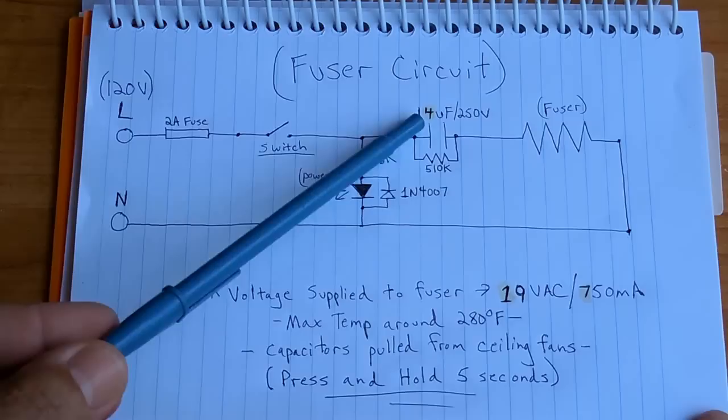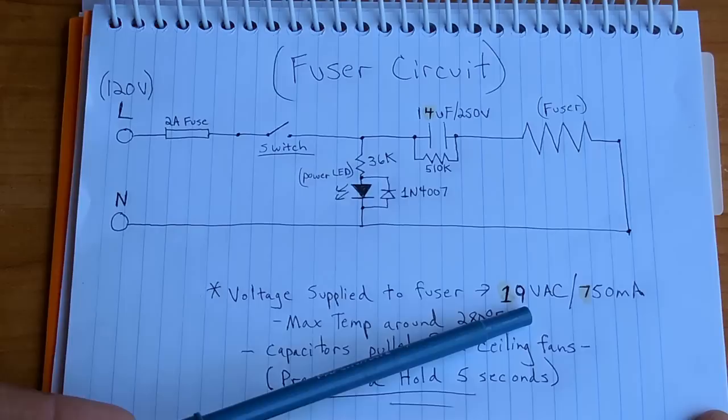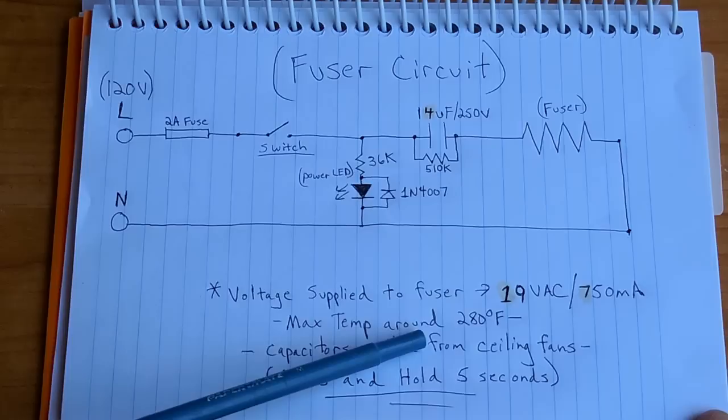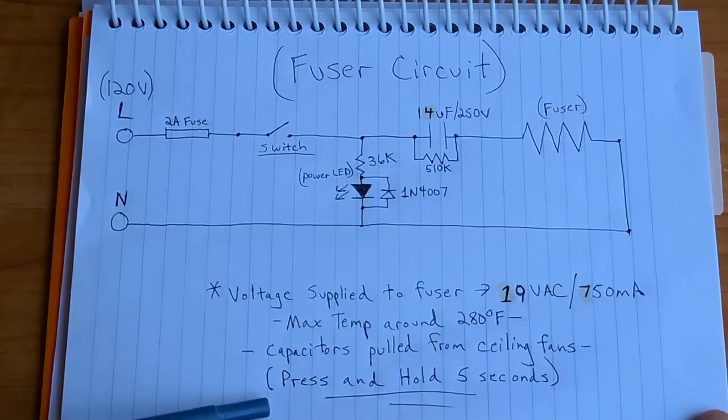Using a 14 microfarad value for the capacitor, you can go a little higher if you want more current to flow, or a little lower if you want less current to flow. The voltage being supplied to the fuser is 19 volts AC, 750 milliamps. Using an infrared thermometer, I tested the ceramic heater to be around 280 degrees Fahrenheit.